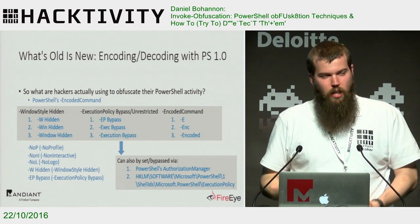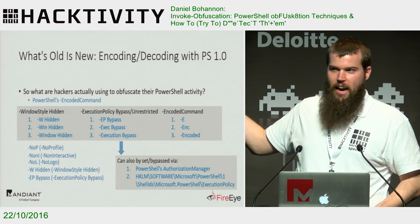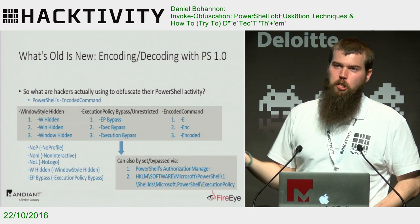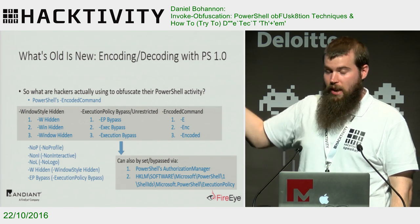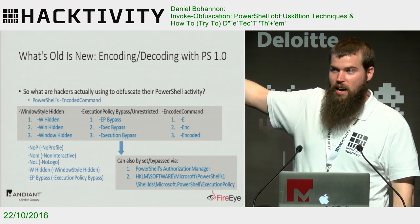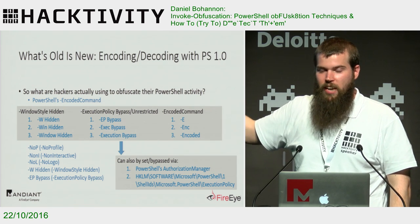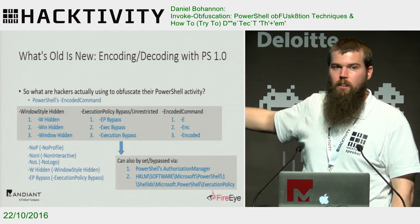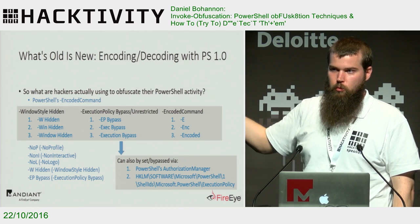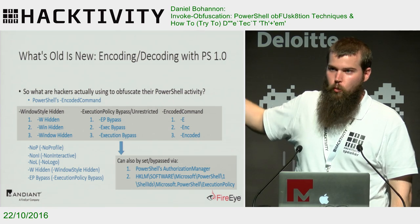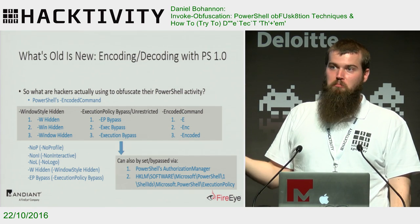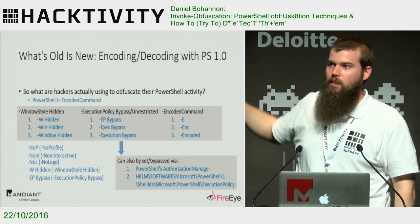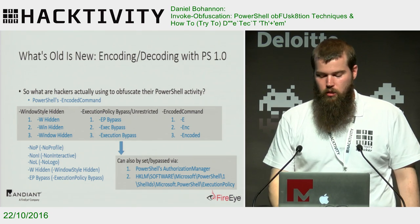Window style is another one where attackers will basically change where the PowerShell window shows up — maybe one pixel by one pixel way out in left field — so you don't have to define it on the command line. So for encoded command, this is typically what we see attackers use: '-EncodedCommand', '-Encoded', '-ENC', and as I started to play with certain tools, I saw they were using '-E', like Metasploit uses '-E', and it's like — this isn't documented, but it works.